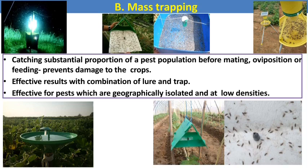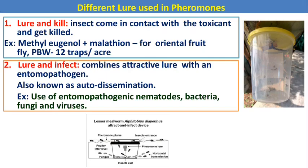Mass trapping involves catching a substantial proportion of the pest population before mating, oviposition, or feeding to prevent damage to crops. Effective results come from combinations of lures and traps, especially for pests that are geographically isolated and at low density. Lures can be used for killing purposes — for example, methyl eugenol plus malathion for oriental fruit fly — or for infecting insects using entomopathogenic nematodes, bacteria, fungus, or virus.